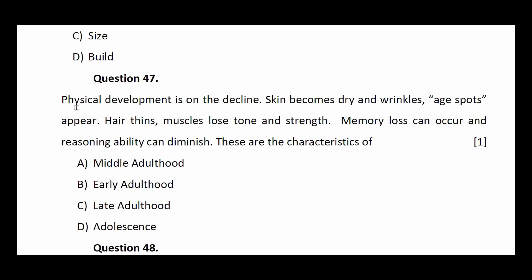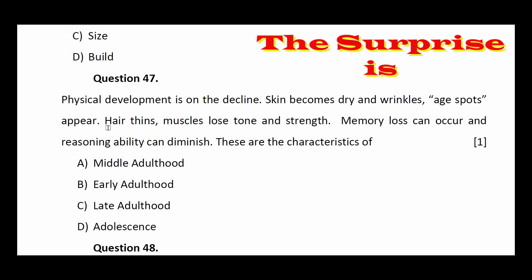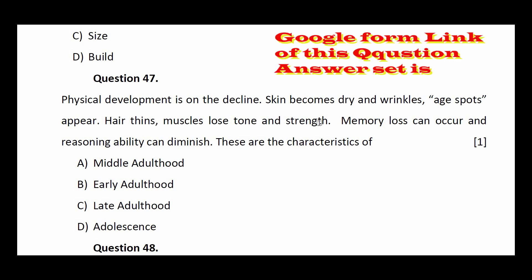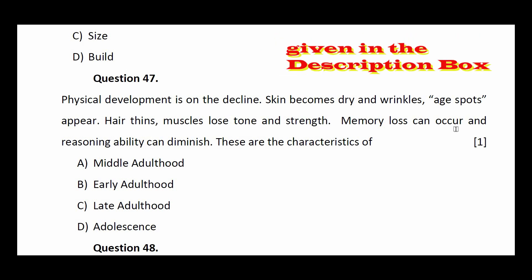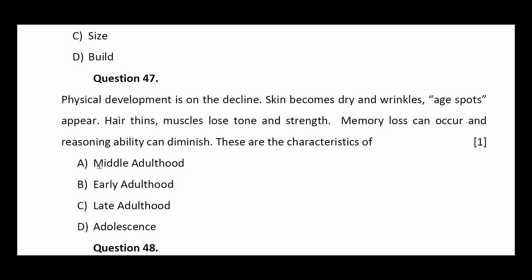Question number forty-seven: physical development is on the decline; skin becomes dry and wrinkled; age spots appear; hair thins; muscles lose tone and strength; memory loss can occur and reasoning ability can diminish. These are characteristics of: middle adulthood, early adulthood, late adulthood, or adolescence. The answer is late adulthood.